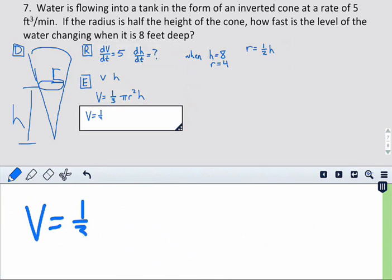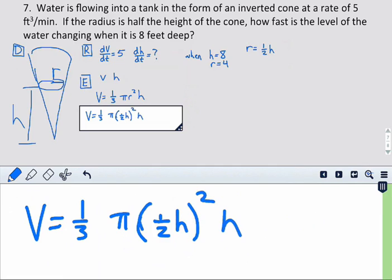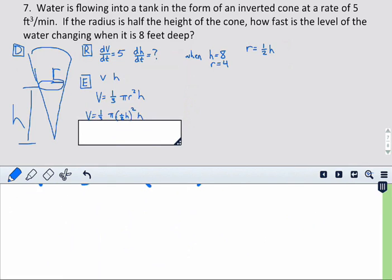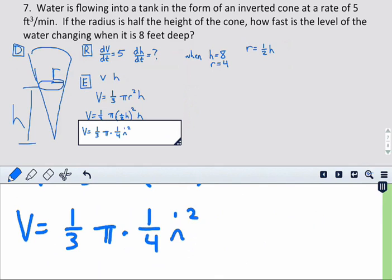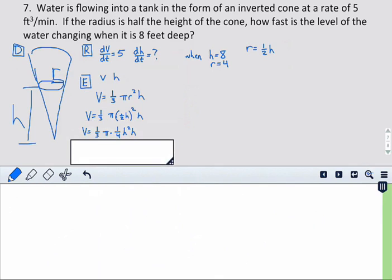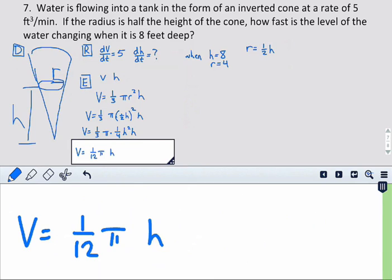So, we actually get v equals one-third pi times the radius, which is one-half h squared times h. Now, it's best to simplify this if we can. So, v equals one-third pi times one-fourth h squared h. And we can simplify this one more time, and we're gonna get one-twelfth pi times h cubed.